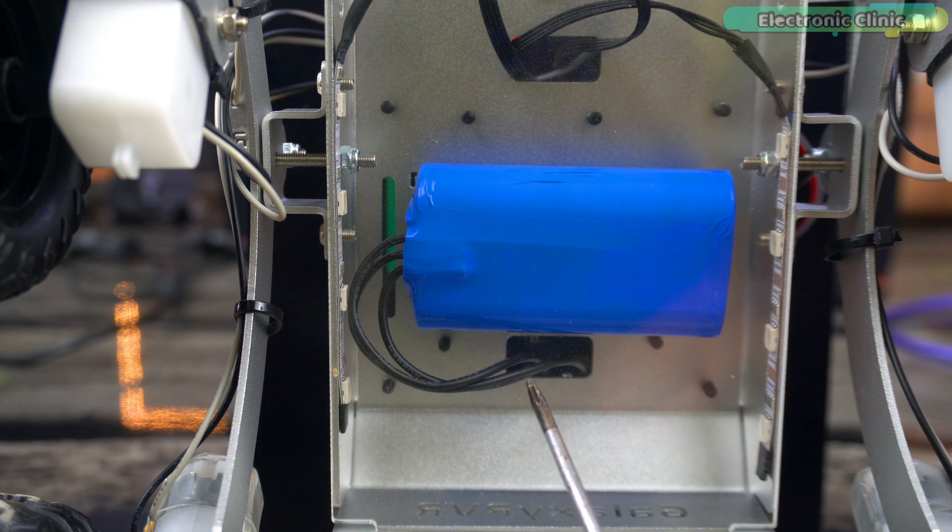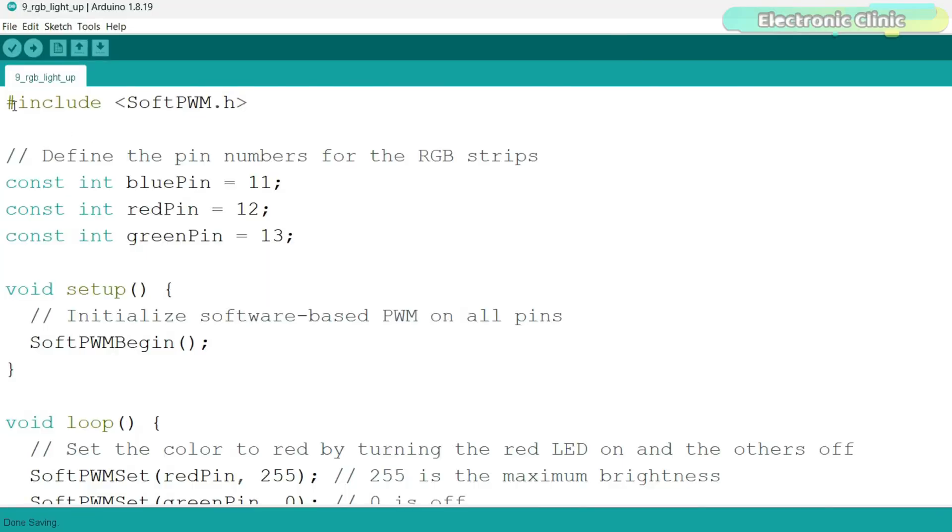Let's start with our first example which is about turning the LED strips on and off. As usual, for the PWM, we have added the soft PWM library which is the same library for controlling the speed of all six motors. These are the pins our LED strips are connected to.